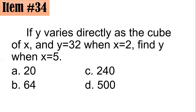Item 34: if y varies directly as the cube of x, and y equals 32 when x is 2, find y when x is 5. Is it 20, 64, 240, or 500? This is a variation problem — we need to find the equation of variation and the constant of variation.